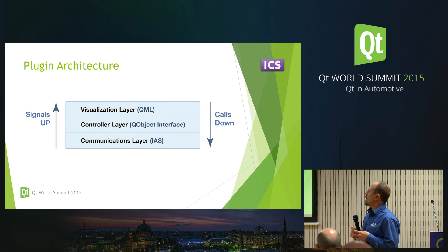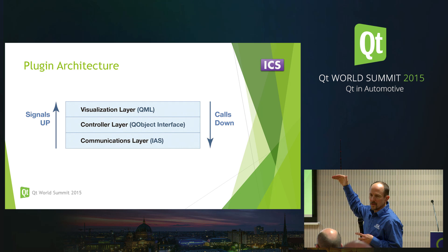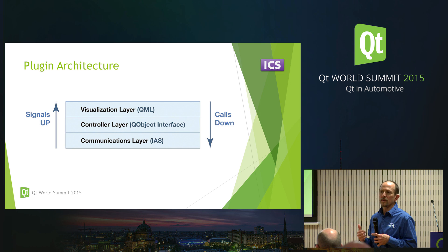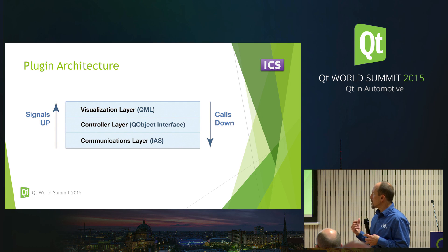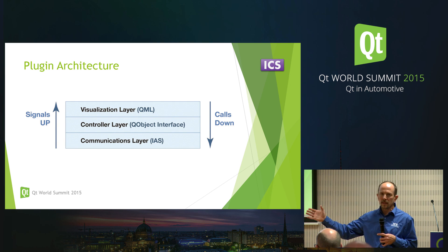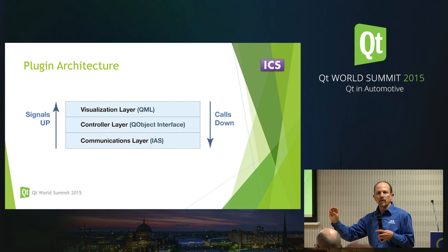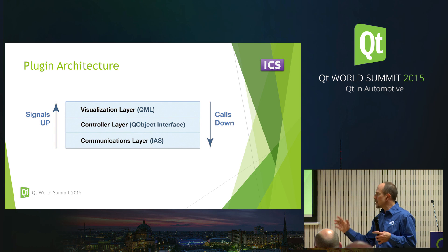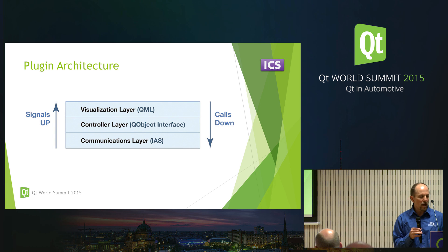One of the keys is that the pieces on top call directly into the layers below — they are dependent upon the lower layers, but the converse is not true. The lower layers just emit signals which the upper pieces pick up. The advantage of this is that we can completely take out that visualization layer and put another piece in when moving from a low-end vehicle with only a few features to something higher-end with much more power.